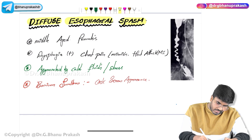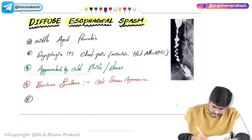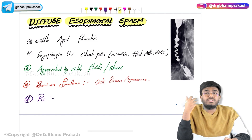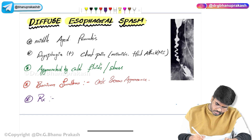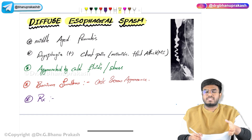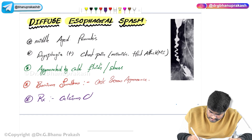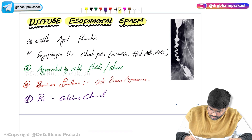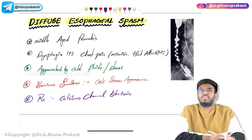The treatment for diffuse esophageal spasm targets the excessive spasms and contractions. To relieve these muscles, we can use calcium channel blockers. So calcium channel blockers are going to be used.